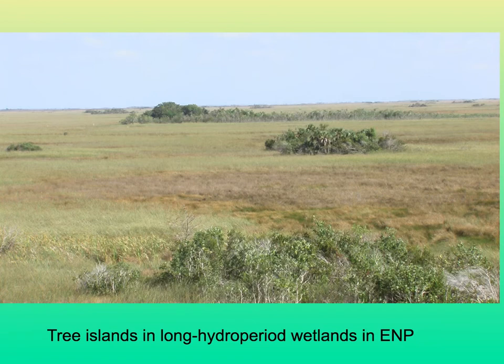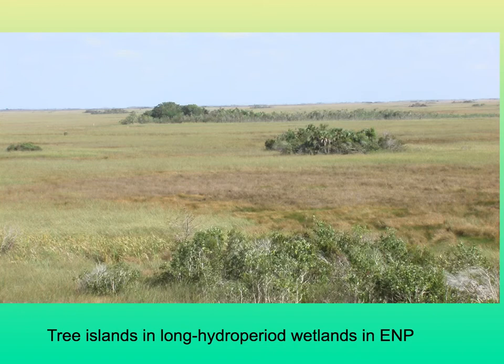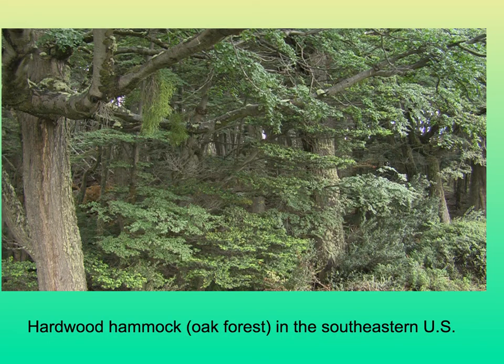In the Everglades we have some unique habitats — though they also occur in other parts of the world with different species — such as tree islands in the long hydroperiod wetlands. This area is covered by water much of the year but dries out so that the tree islands are dry during part of the year. On higher ground in the southeastern U.S., you get hardwood hammocks dominated by oaks and other broadleaf trees.